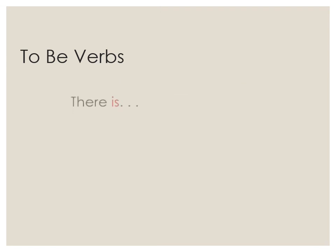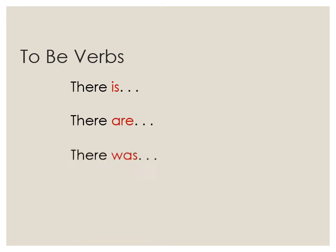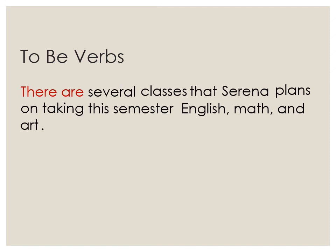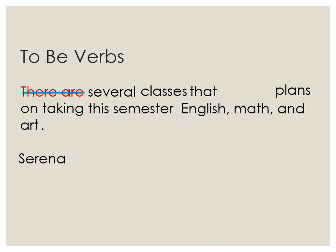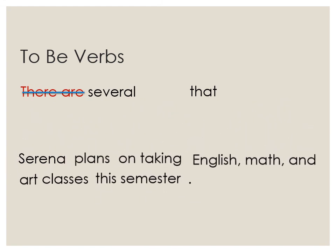Sentences that begin with "there" plus a to be verb tend to be wordy as well. As a general rule, don't start sentences with "there is," "there are," "there was," or "there were." To get rid of "there" plus a to be verb, cut and rearrange words in a sentence. First, look for the agent of the sentence. In "there are several classes that Serena plans on taking this semester — English, Math, and Art" — Serena is the agent, so she should be at the beginning. Then choose words that tell what the agent is doing: "Serena plans on taking English, Math, and Art classes this semester."